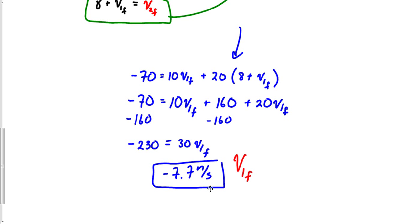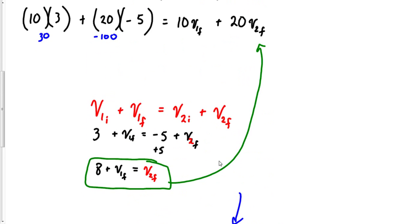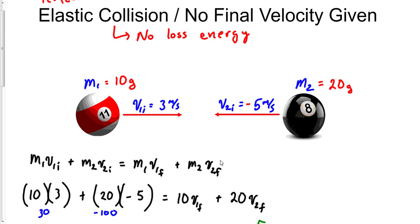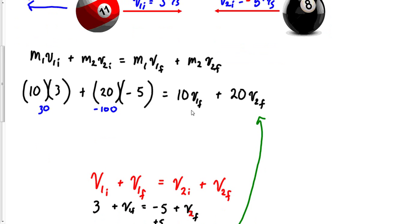v1 final is negative 7.7 meters per second. That means after this ball hits, this ball is going to hit and go the opposite direction. Well we still need to find the v2 final. What's going to happen to this guy? Is it going to hit and bounce back or is it going to continue to go forward?